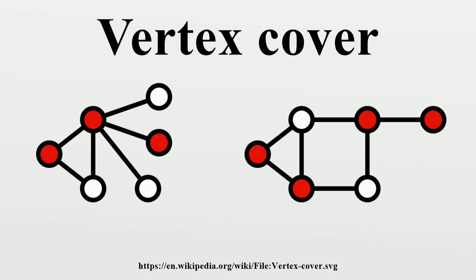Such a set is said to cover the edges of the graph. The following figure shows two examples of vertex covers, with some vertex cover marked in red. A minimum vertex cover is a vertex cover of smallest possible size. The vertex cover number is the size of a minimum vertex cover. The set of all vertices is a vertex cover; the endpoints of any maximal matching form a vertex cover. The complete bipartite graph has a minimum vertex cover of size.